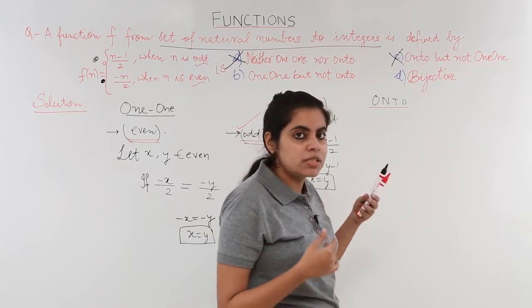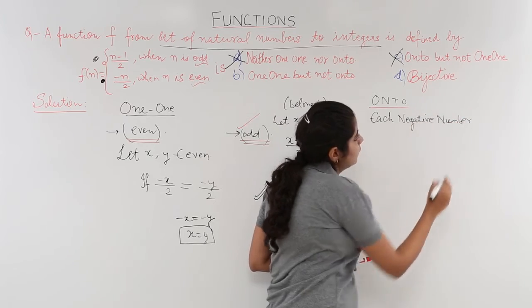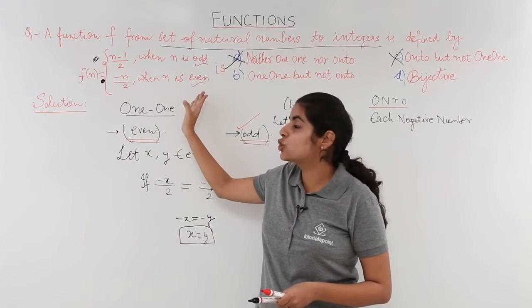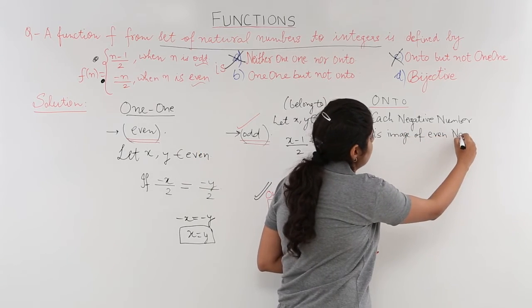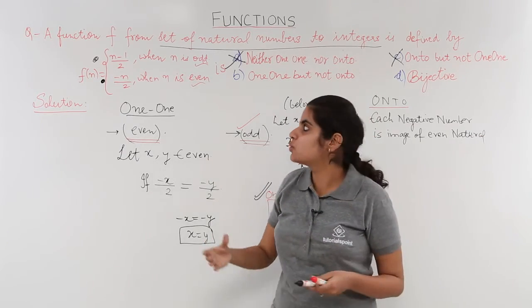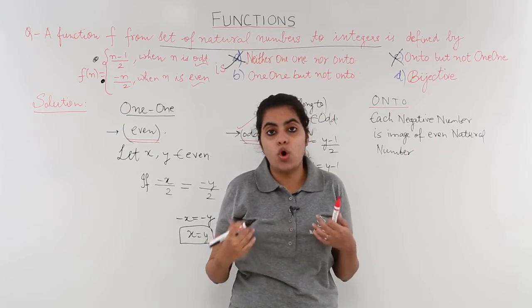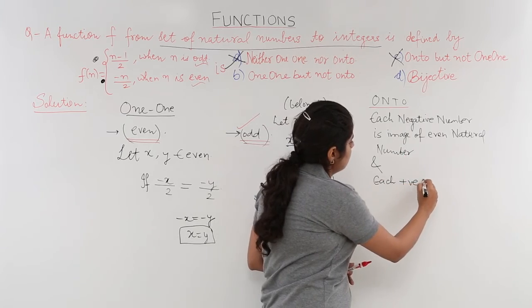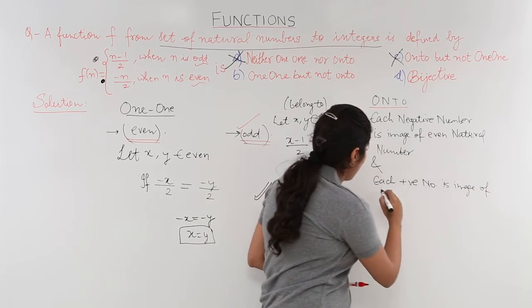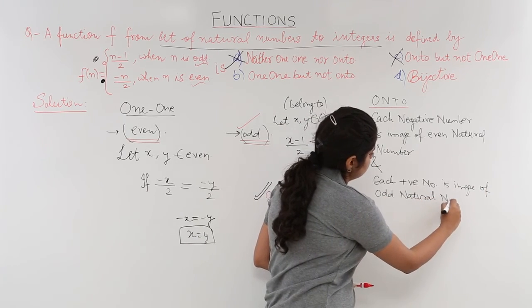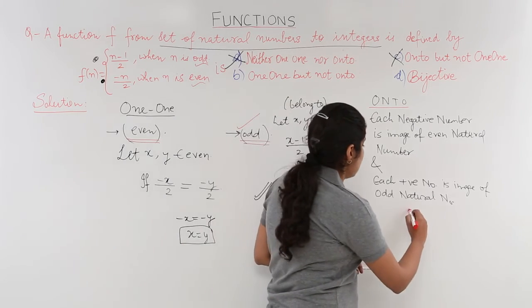To write this properly: each negative number is the image of an even natural number, and each positive number is the image of an odd natural number. So every element in the co-domain (integers) has a pre-image in the domain (natural numbers). Nothing is left blank; hence it is an onto function.